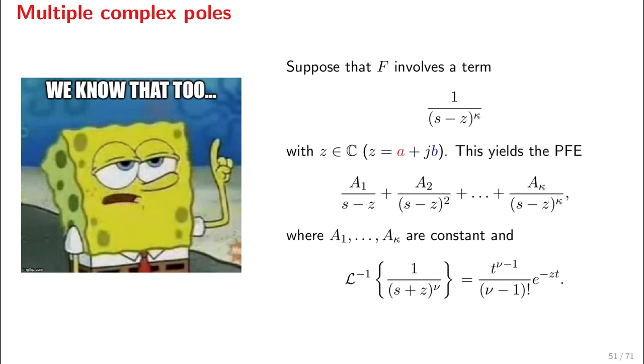So A₁/(s - z) + A₂/(s - z)² and so on and so forth up to Aκ/(s - z)^κ. These are constant coefficients—A₁ to Aκ are constant. Using this familiar inverse Laplace transform, we have that this produces terms of the form exponential times power, so t^(κ-1) times the exponential of zt.